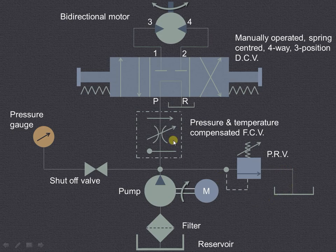This is the pressure and temperature compensated flow control valve. This arrow indicates it is pressure compensated and this arrow indicates that it is temperature compensated. This is the flow control valve.